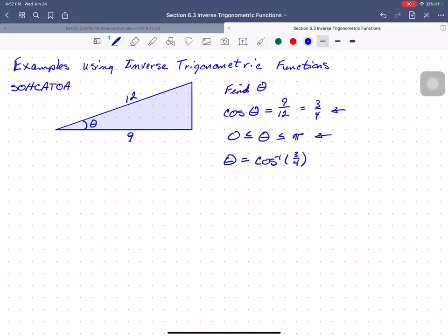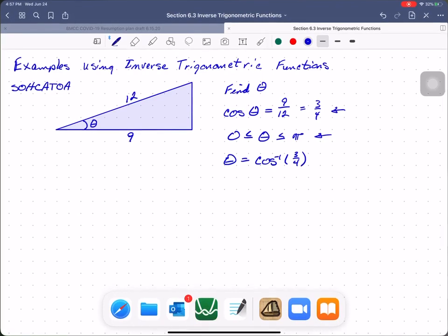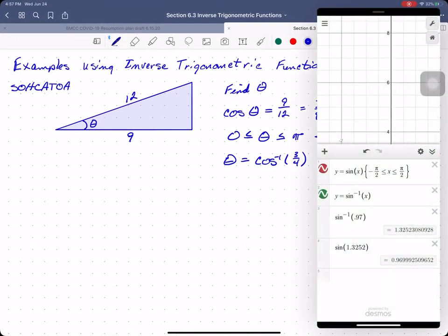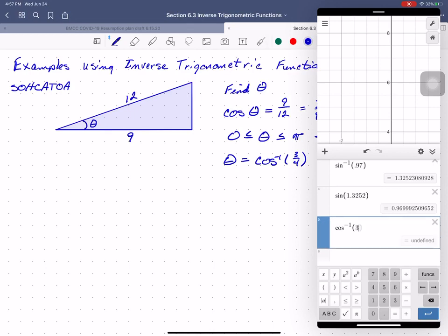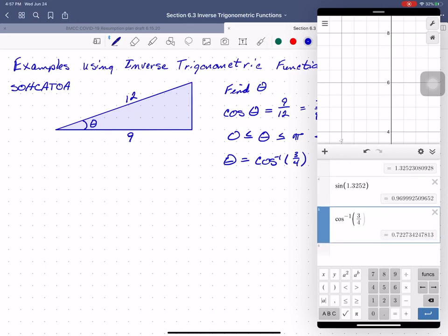Now three-fourths is not one of my special known unit circle values, so we'll use Desmos to take the inverse cosine of three-fourths, and I get 0.7227. Now that's in radians.